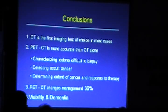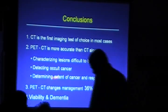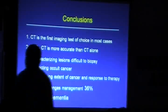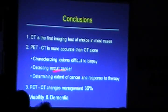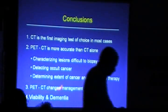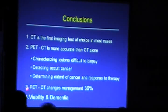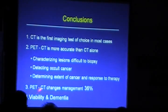You have serum markers rising — CA rising, CA-19 rising — and yet you don't see any clear picture. Knowing the response to chemotherapy can be done; CP changes management in 36 days. It is also helpful for differentiation of viability and non-viability in myocardial intervention.